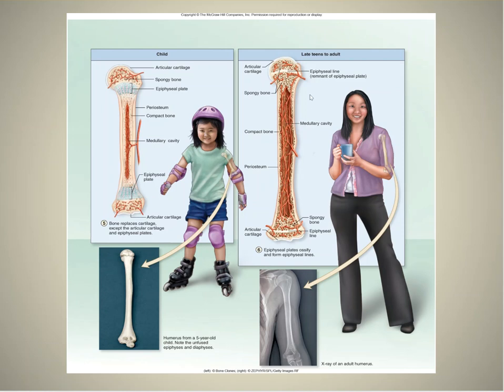In late teens to adulthood, under the influence of sex hormones, the epiphyseal plate will ossify and become the epiphyseal line, and you are not getting any taller. That's it.